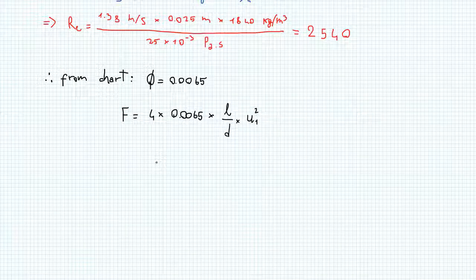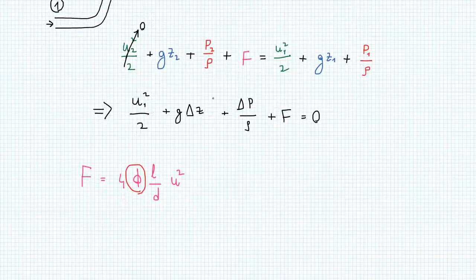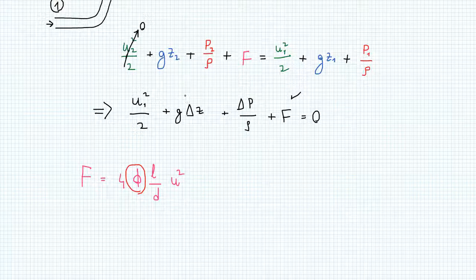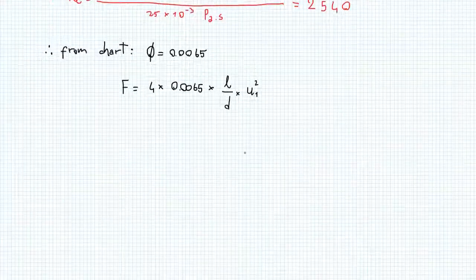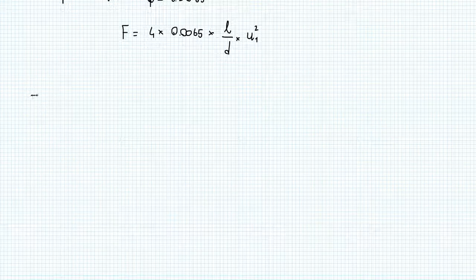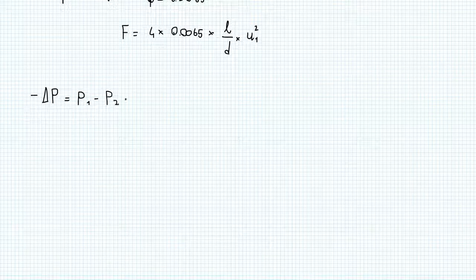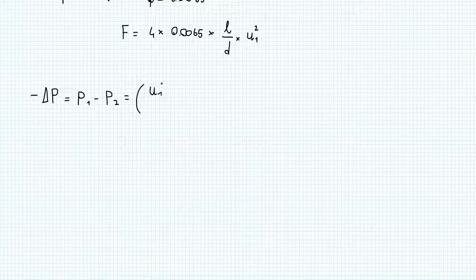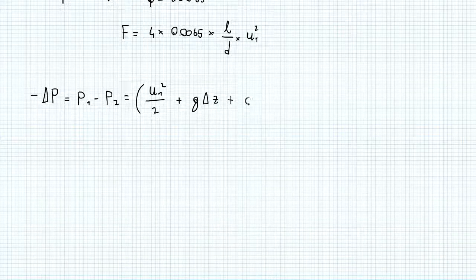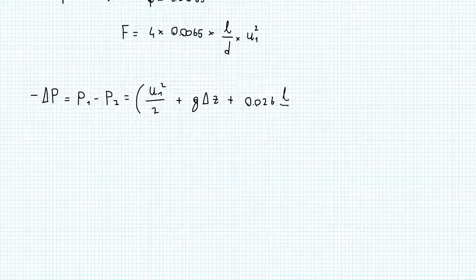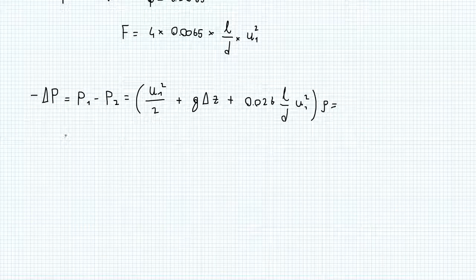Now, we can go back to our energy balance that we wrote at the start, and we find that now we know every quantity except for the delta p, so we can actually calculate it. We know the energy dissipated, we know the potential energy, and we know the kinetic energy, and we obviously know the density as well. So, if we write the pressure drop as negative delta p, that's going to be p1 minus p2. That's equal to, I'll multiply it by the density, u1 squared over 2 plus g times delta z plus 0.026 l over d times u1 squared. And putting in the numbers gives us the following.